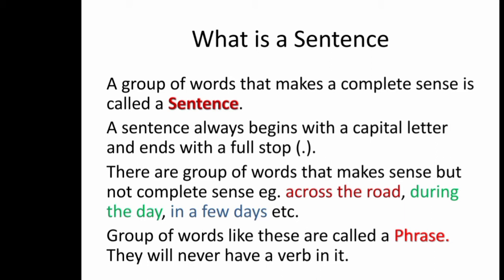Groups of words like these are called phrases. A phrase will never have a verb in it. So, sentences are a group of words put together which convey a sensible meaning and contain a verb. If a group of words does not have a verb, we call it a phrase.